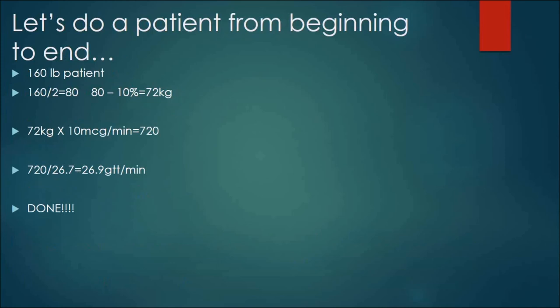So let's do a patient from the beginning. You've got a 160 pound patient. 160 divided by 2 is 80. 80 minus 10 is 72 kilos. 72 kilos times 10 micrograms is 720. Take that 720 divided by 26.7, 26.9 gtts per minute, and you are done.